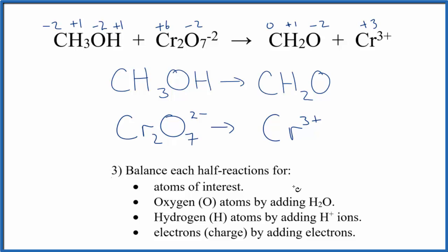At this point we can balance each of these half reactions. First we'll balance the atoms. We have a carbon here and a carbon here. That's balanced. Chromium and then the chromium. So let's put a 2 here because we have 2 chromiums here, just the 1. So we balance the atoms of interest.